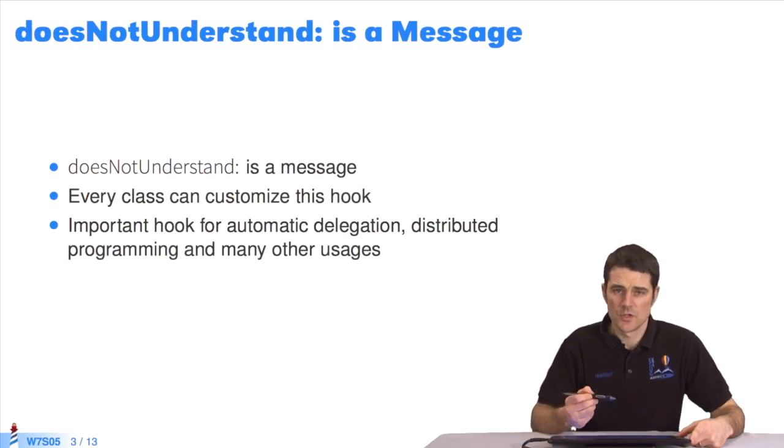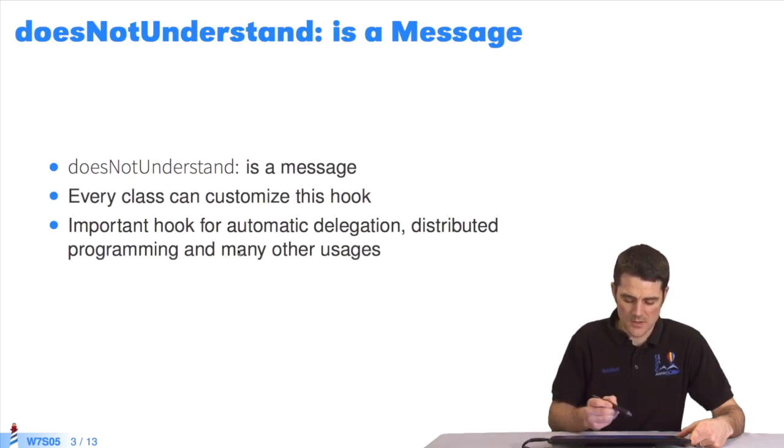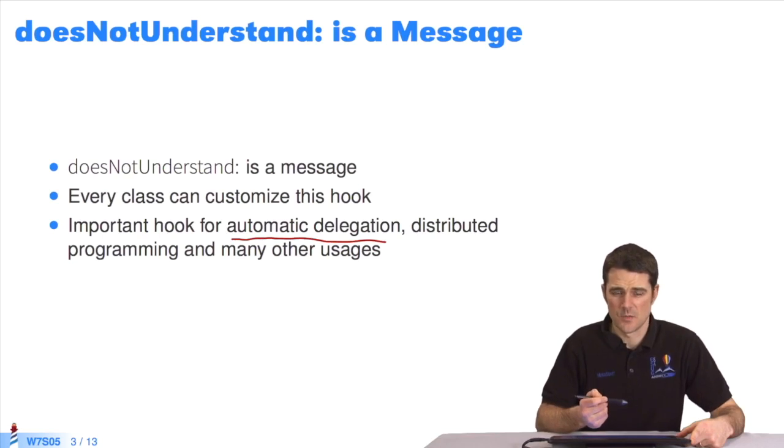doesNotUnderstand is a message that the virtual machine sends to objects when a message has failed. All classes can redefine this method to give it a specific behavior when a message is not understood. This method is an important tool that allows us to build many features. It's used in automatic delegation, distributed programming, and so on.